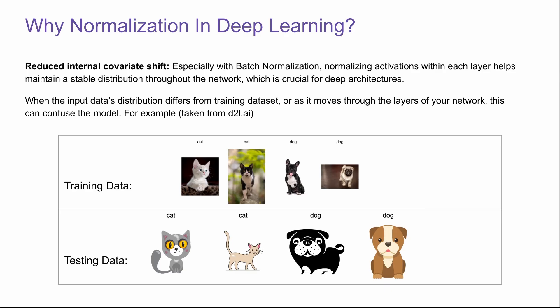Here is an example of how internal covariate shift can happen. Let's say your training data consists of actual cats and dogs, which obviously follow some kind of distribution. And when you actually do testing, it turns out all the testing data is actually cartoons, so the distribution is a bit different from your training data. If you don't do any batch normalization, it's very likely the model won't perform well on testing data because of the internal covariate shift, which can confuse the model a lot.